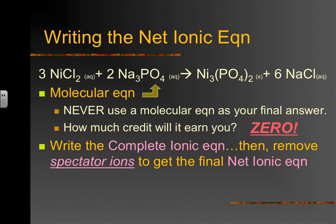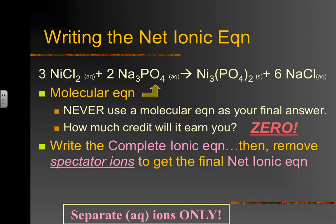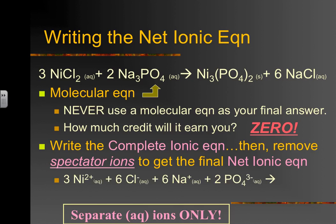To get from a molecular equation to a net ionic equation: first write the complete ionic equation, then remove spectator ions. To write a complete ionic equation, you need to separate aqueous ions. Nickel(II) chloride, sodium phosphate, and sodium chloride are all aqueous, so we separate those ions. Pause the video and look carefully at the numbers — verify that you understand the coefficients in front of each chemical and ion.